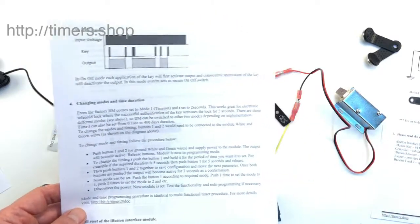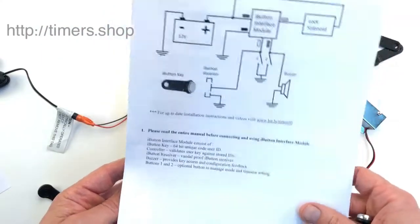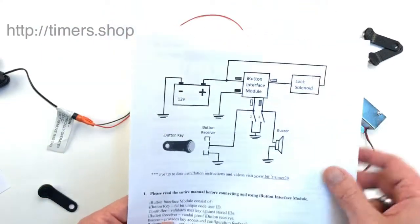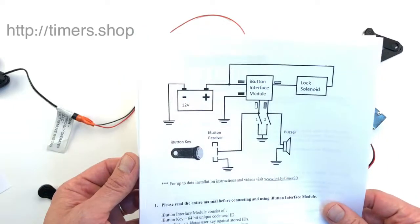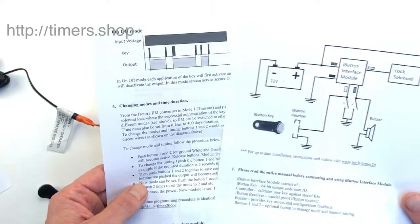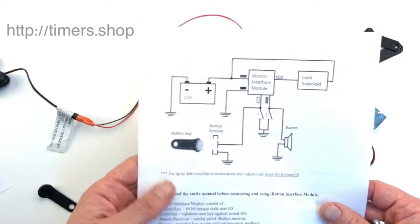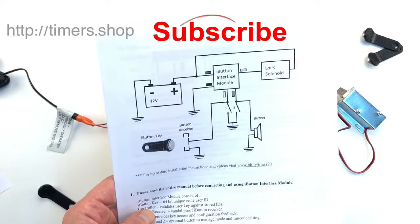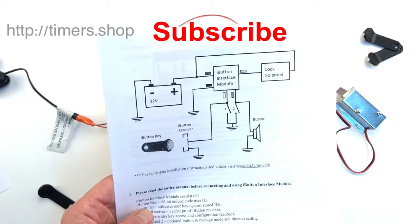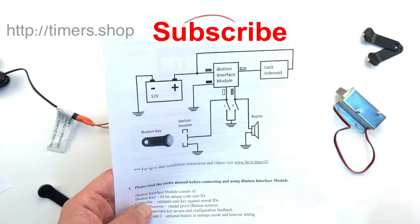It's very simple to connect. Buttons one and two are only used to change the modes and timing. If you just want to create a lock and don't need to change the timing, you don't even need to connect the buttons. Thank you so much.